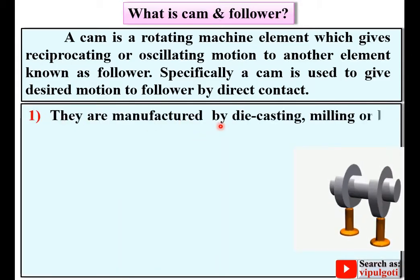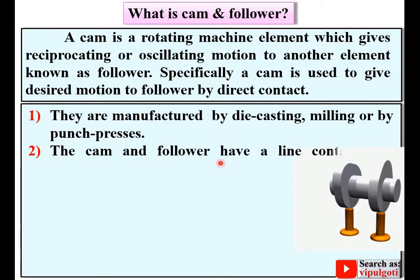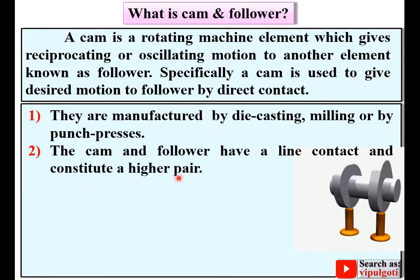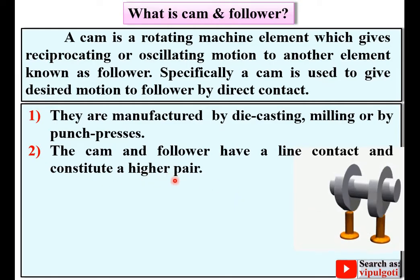CAMs are manufactured by die casting, milling, or by punch presses. The CAM and Follower have a line contact and constitute a higher pair.